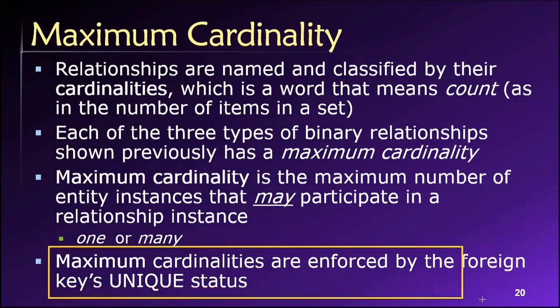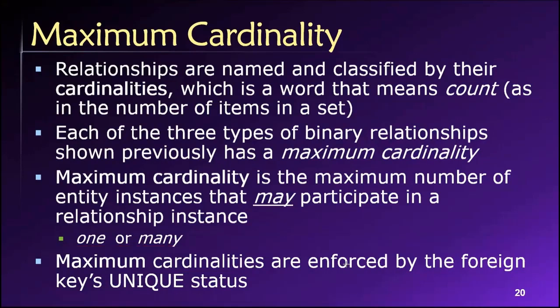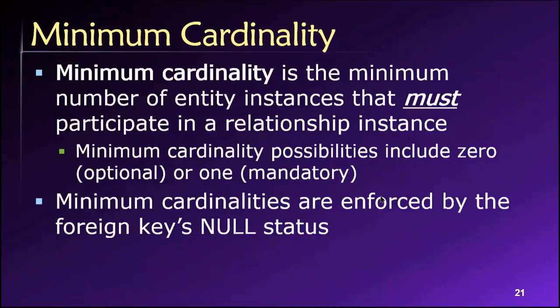We can enforce the maximum cardinalities by using the unique status on a foreign key. If you want something to have a relationship of one, we implement a unique requirement on that foreign key column. If many are allowed, we do not implement a unique requirement. We'll see that momentarily, but for now let's move on and talk about minimum cardinalities.